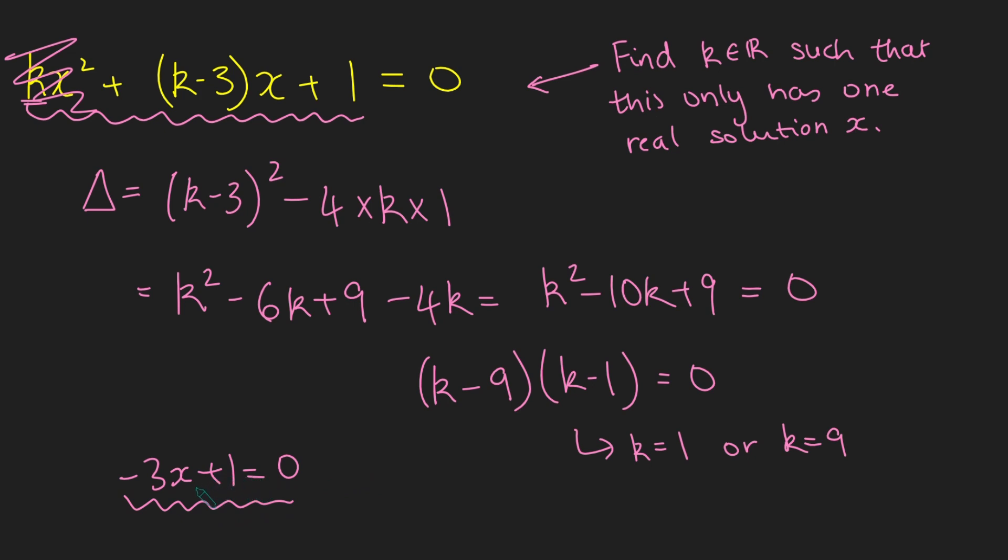And so therefore, k = 0 is also another value of k which gives this equation to only have one real solution. So our final answer to this problem is k = 1, or k = 9, or k = 0.